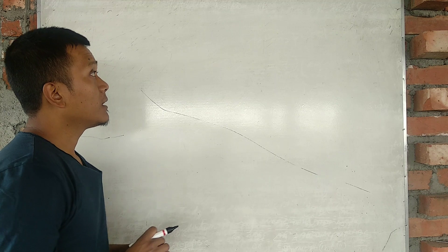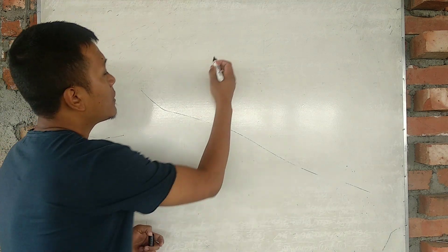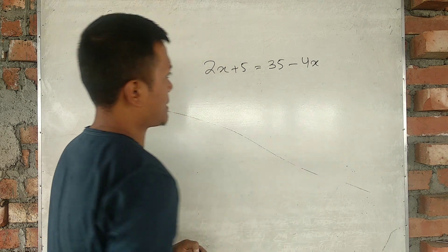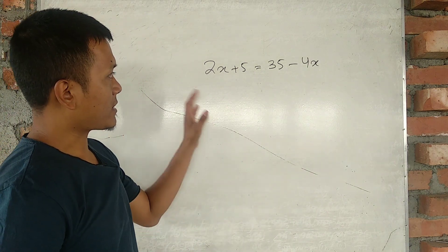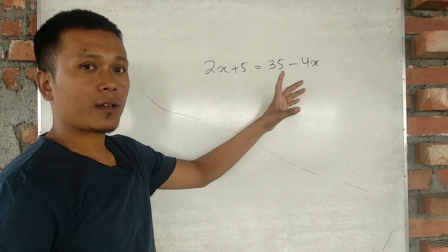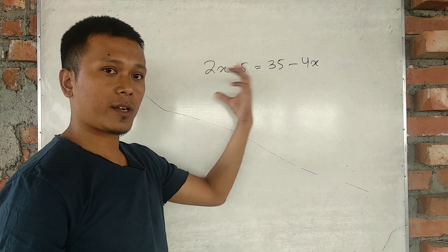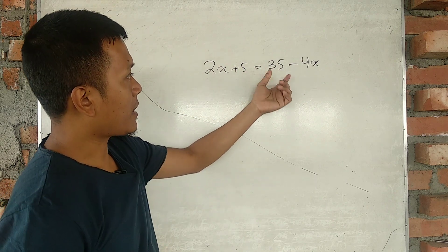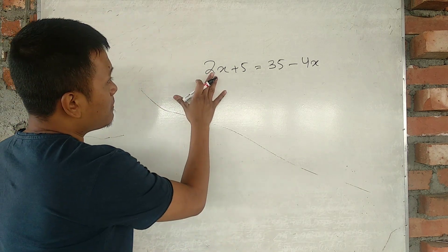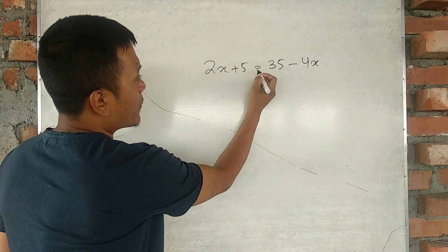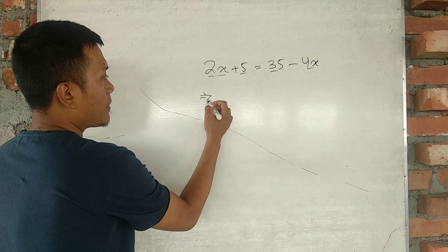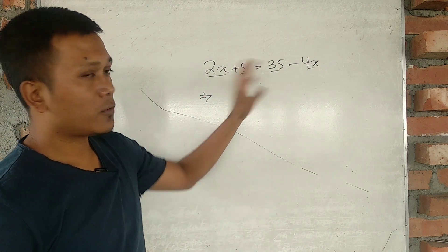Example 2: 2x plus 5 is equal to 35 minus 4x. Here we need to expand and solve. We have variables on both sides. The left-hand side is 2x plus 5 and the right-hand side is 35 minus 4x. We will use transposition to bring all x terms to one side.